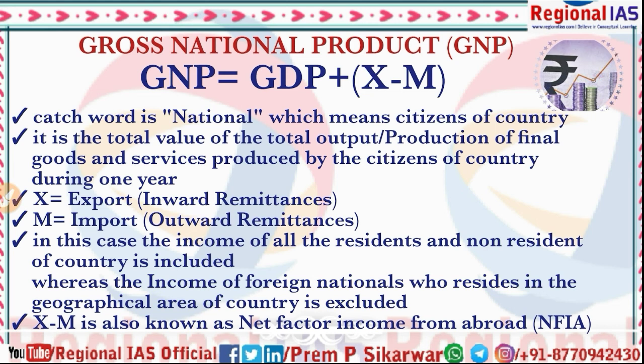The formula is: GNP = GDP + X − M, where X means exports. For example, if you work in India in the IT sector with companies like TCS, Microsoft, Amazon, or IBM, that income counts. So when you work in India and export services, that value is included.